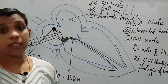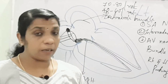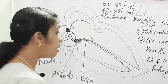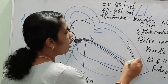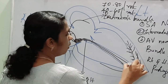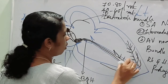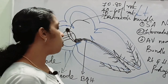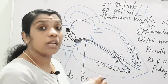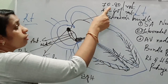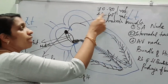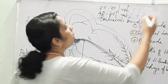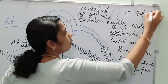The right bundle branch supplies the right ventricle, and the left bundle branch supplies the left ventricle. From both bundles arise small fibers known as Purkinje fibers, which carry the impulse to the whole of the ventricles. So to summarize: SA node produces impulses at 70 to 80 per minute, AV node at 40 to 60 per minute, and the remaining bundle of His, bundle branches, and Purkinje fibers are capable of producing impulses at 40 to 50 per minute.